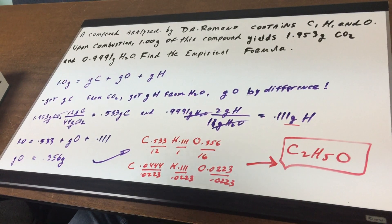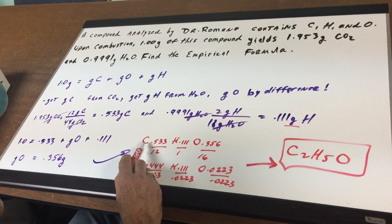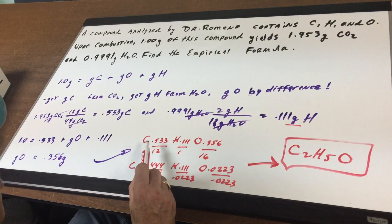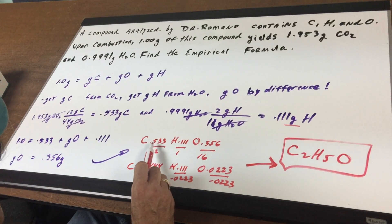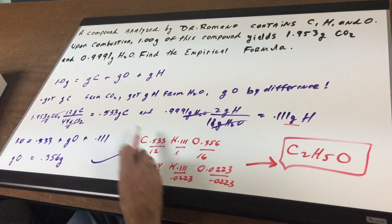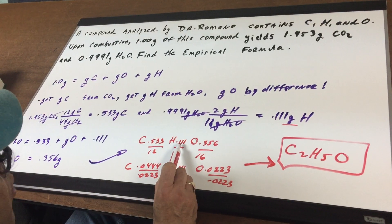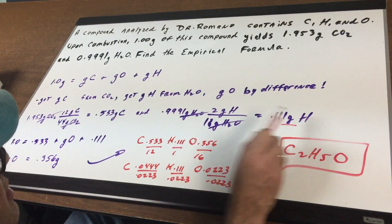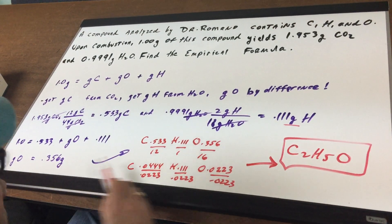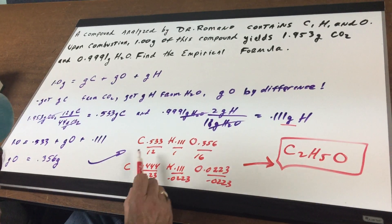Now we lay the three elements out: C, H, O. We have 0.533 grams of carbon, 0.111 grams of hydrogen, and 0.356 grams of oxygen that we worked so hard to get.